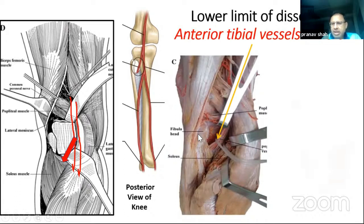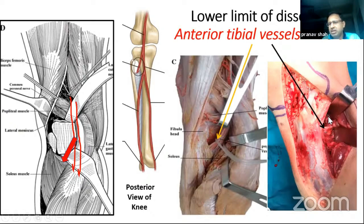In a clinical operative scenario, this is where the anterior tibial vessels are located. This is our posterolateral window, and here is the anterior tibial vessel. This limits the distal extension of our posterolateral window.